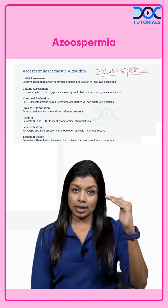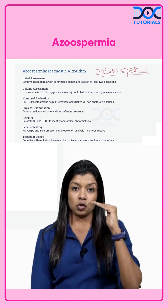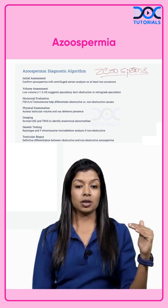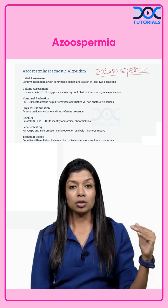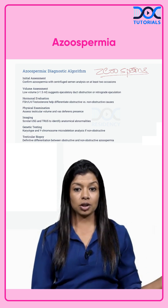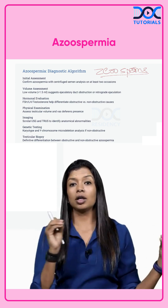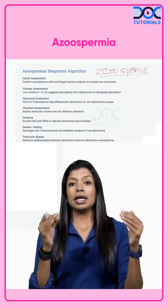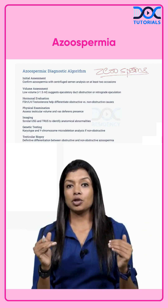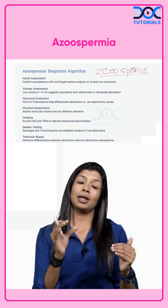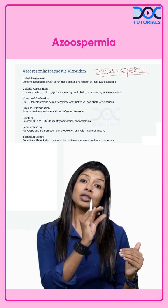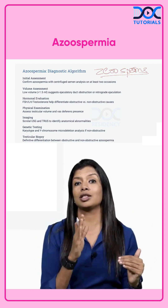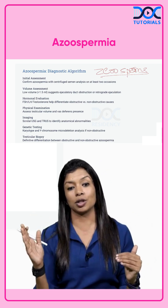You do the initial assessment — you check the volume. If it is low volume, you go towards obstruction or retrograde ejaculation. The next step is hormonal evaluation, which will help you diagnose whether it is pre-testicular, testicular, or post-testicular.